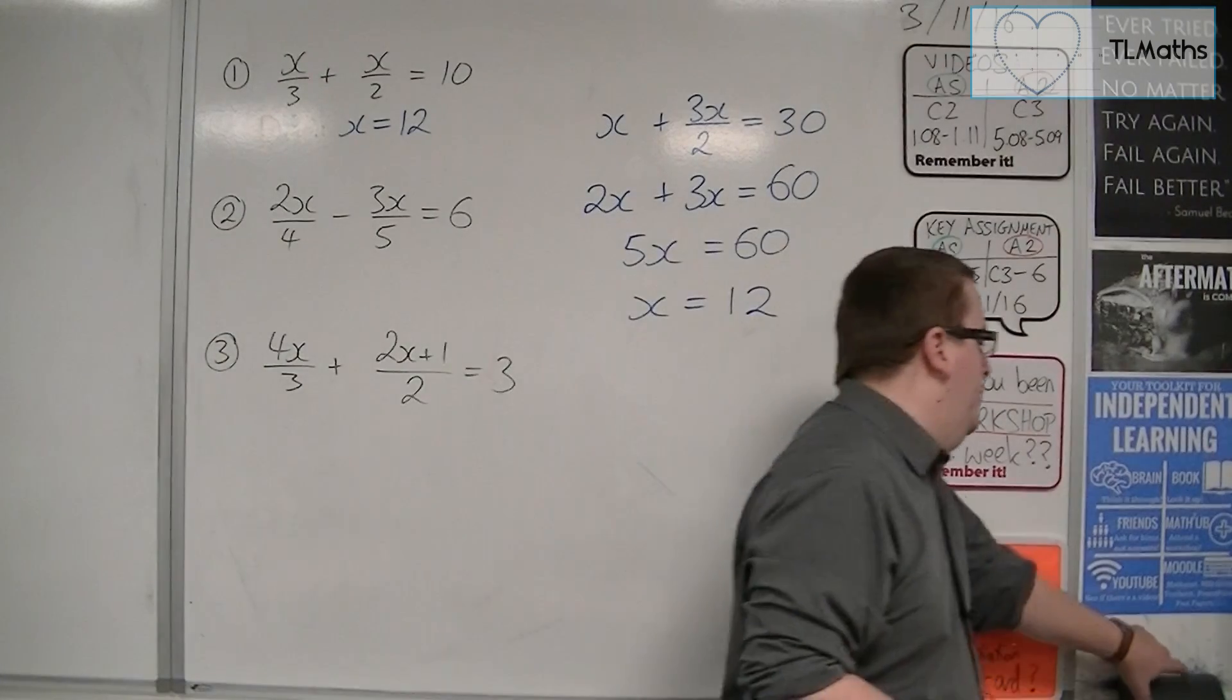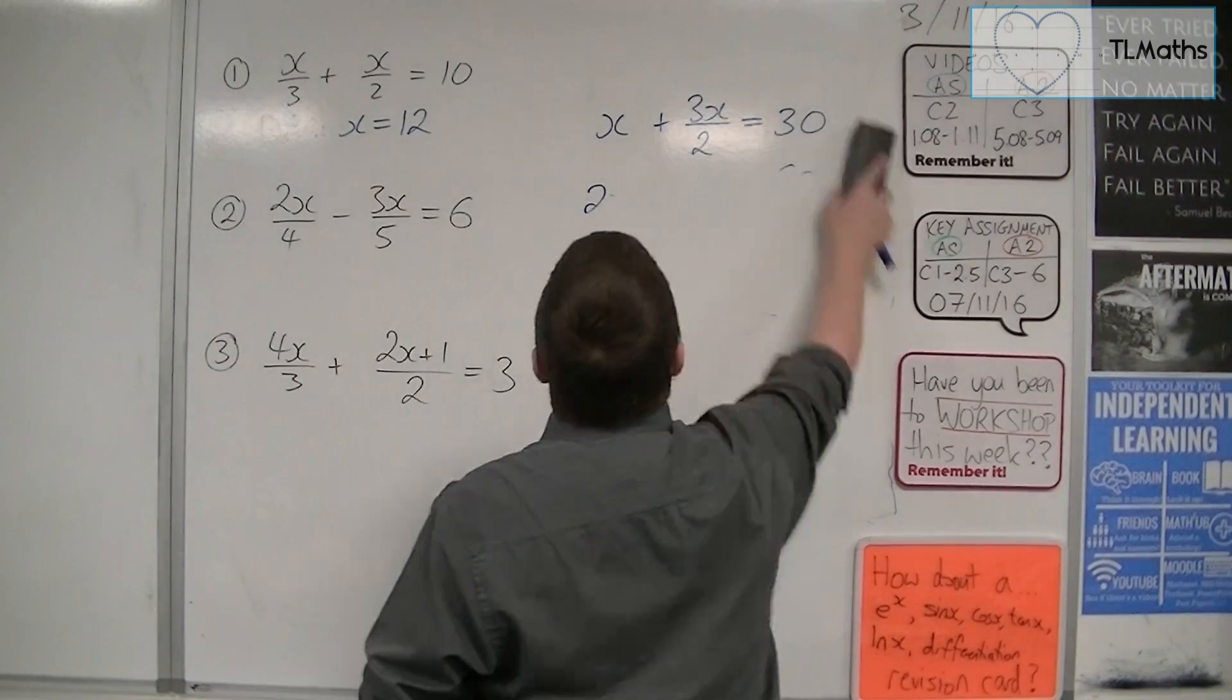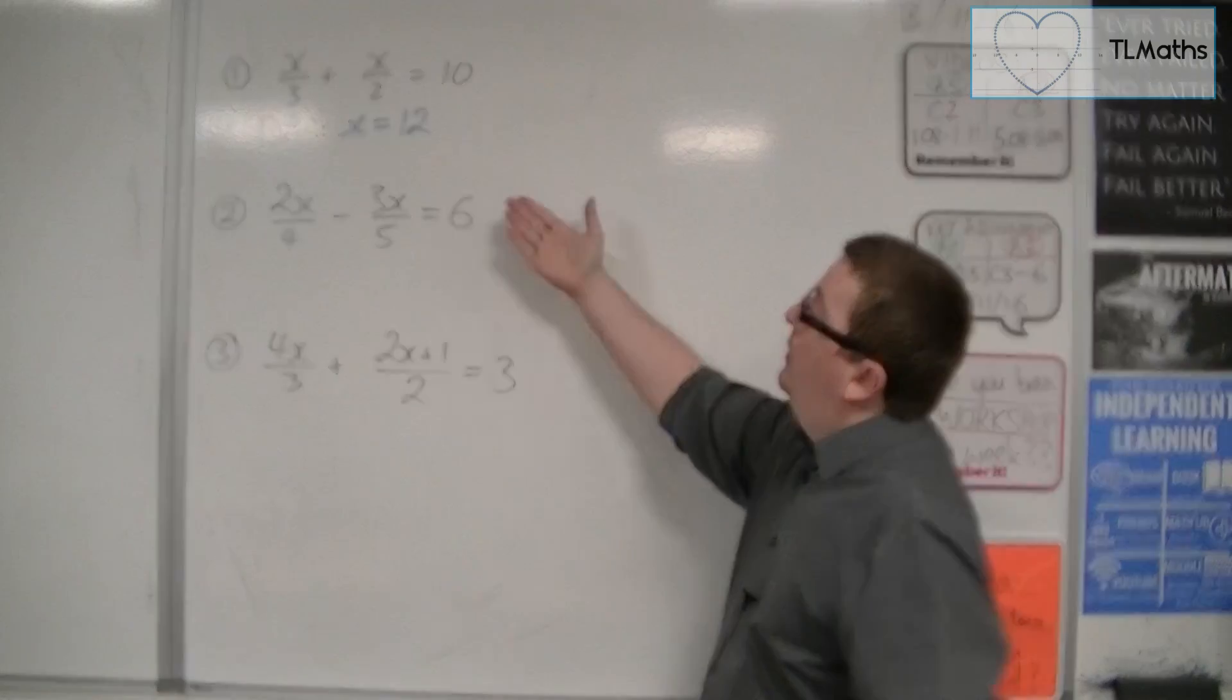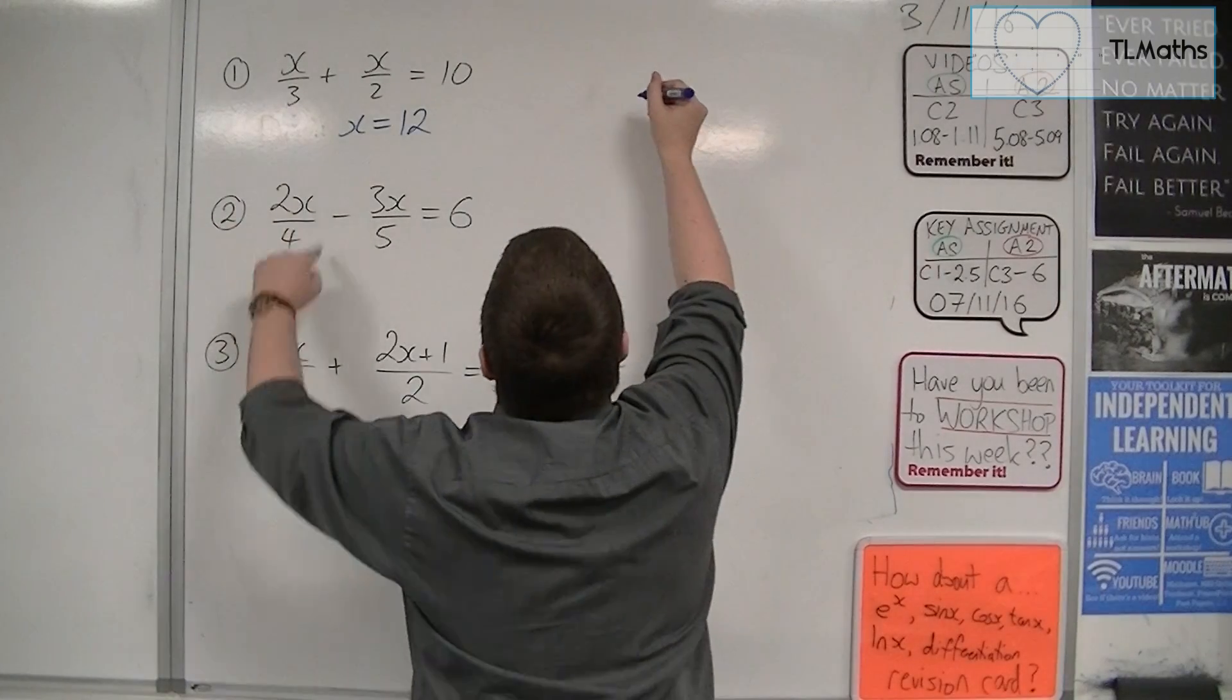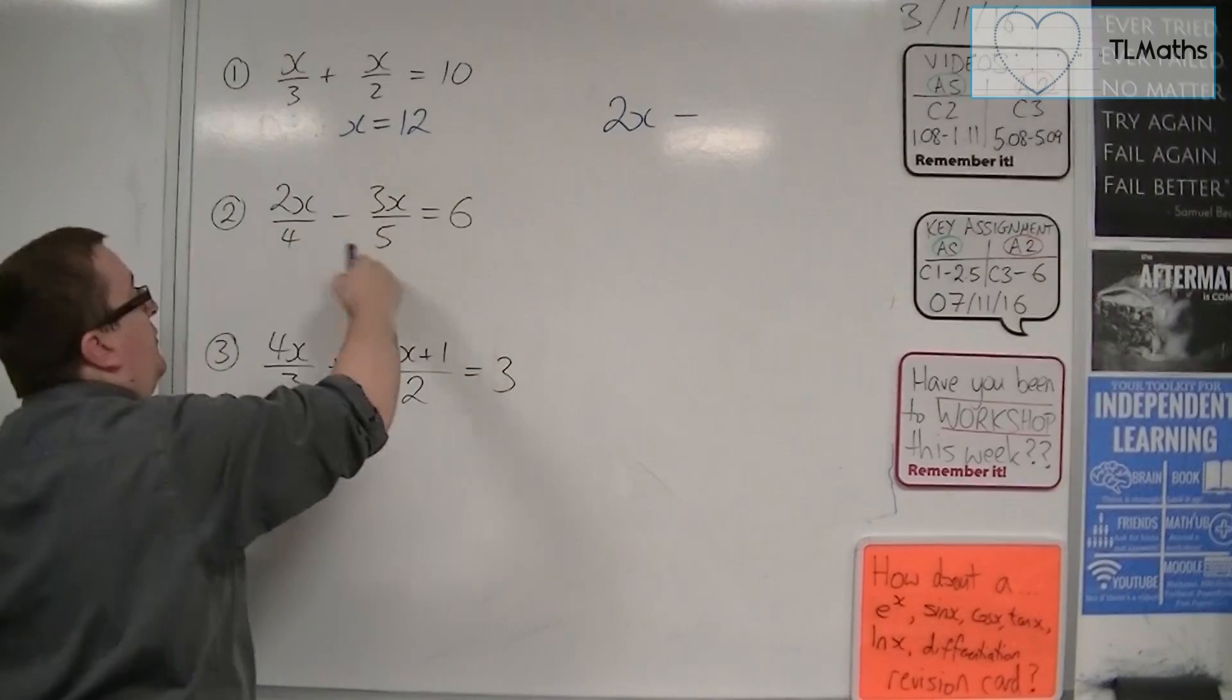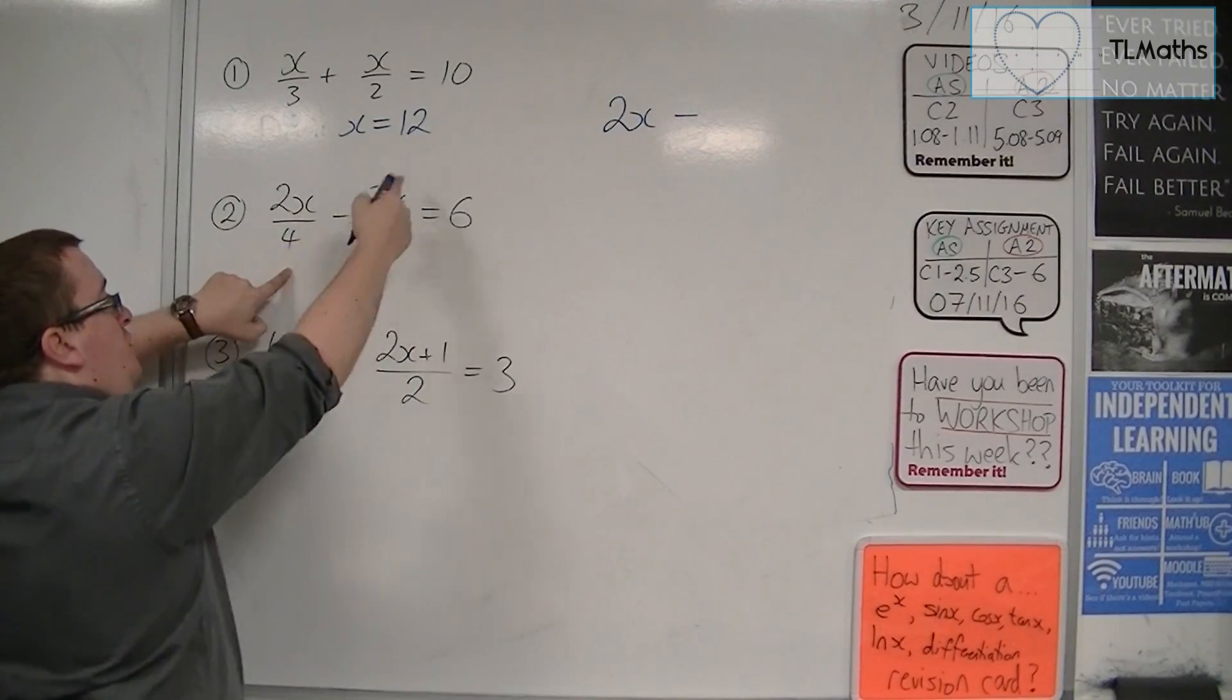So we're going to use a very similar method to solve the remaining two there. So number 2. Let's start by multiplying both sides by the 4. So I'm going to get 2x over 4 multiplied by 4 is just 2x. Then I'm multiplying this minus 3x over 5 by 4. So it's just going to multiply with the numerator.